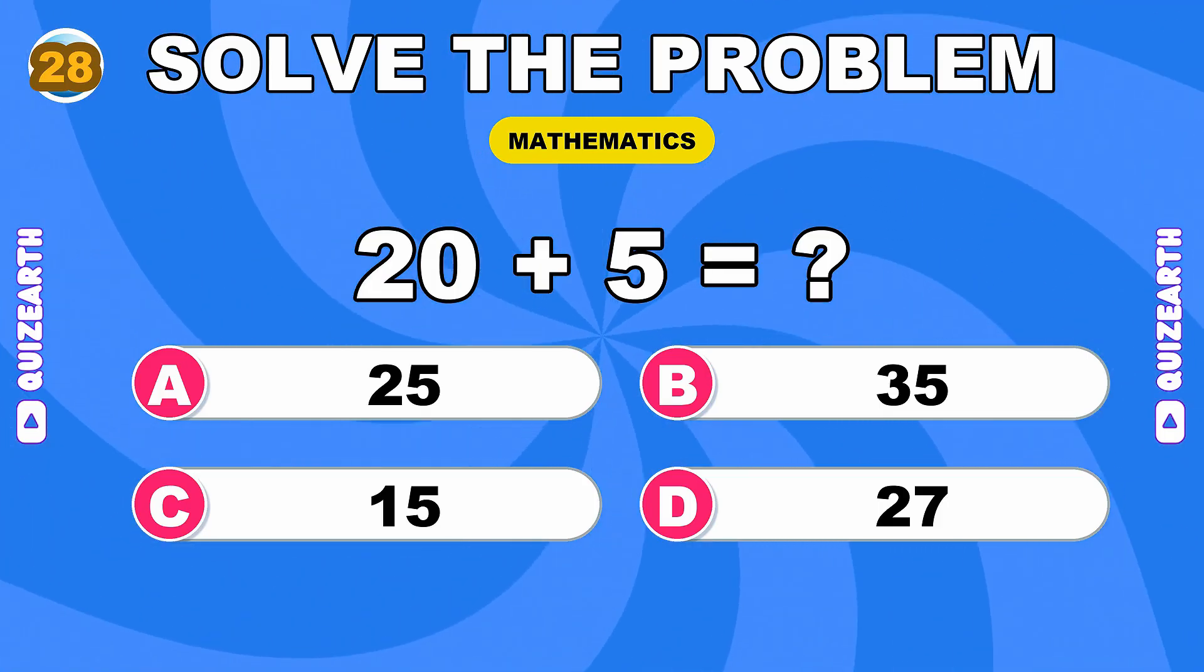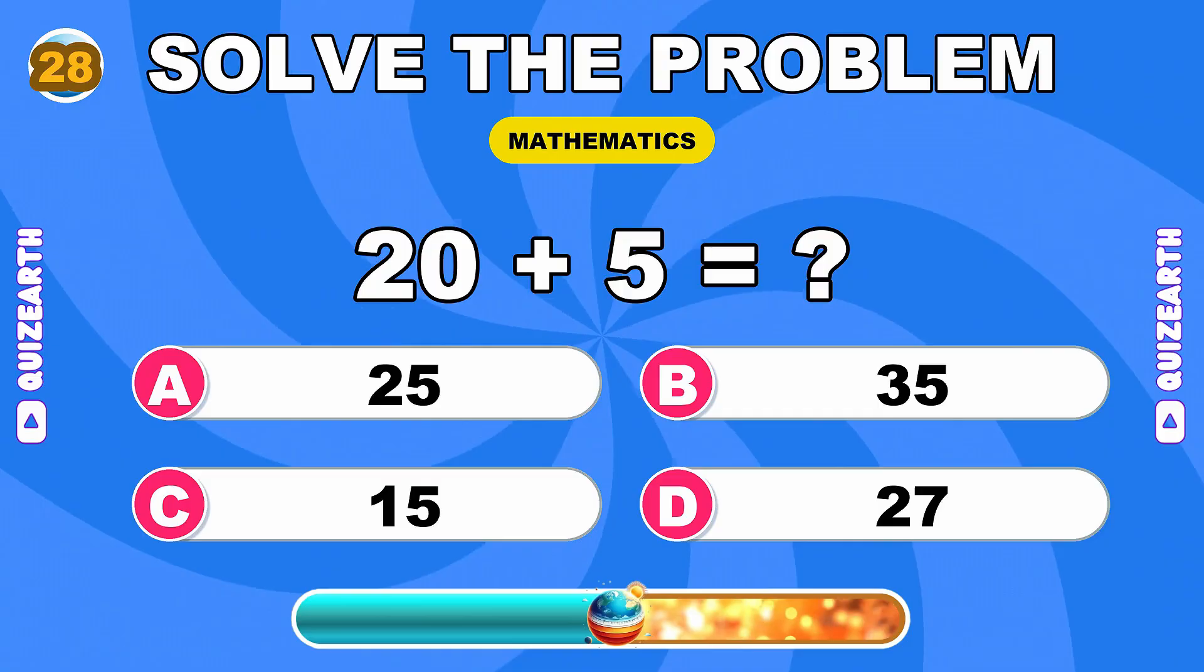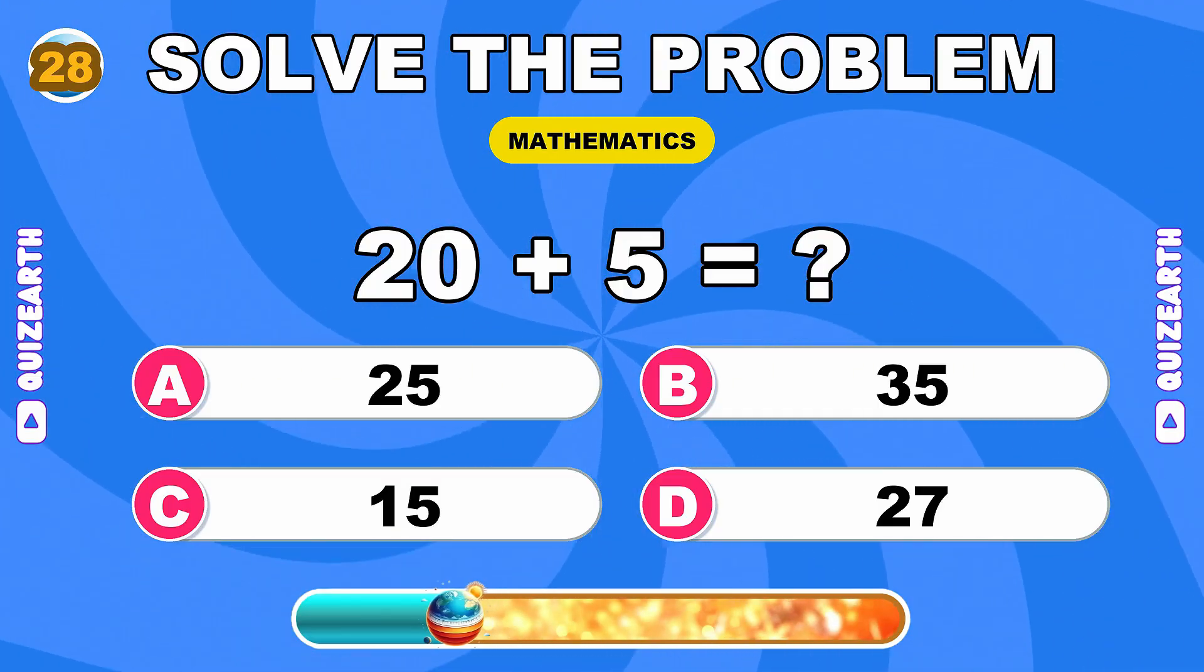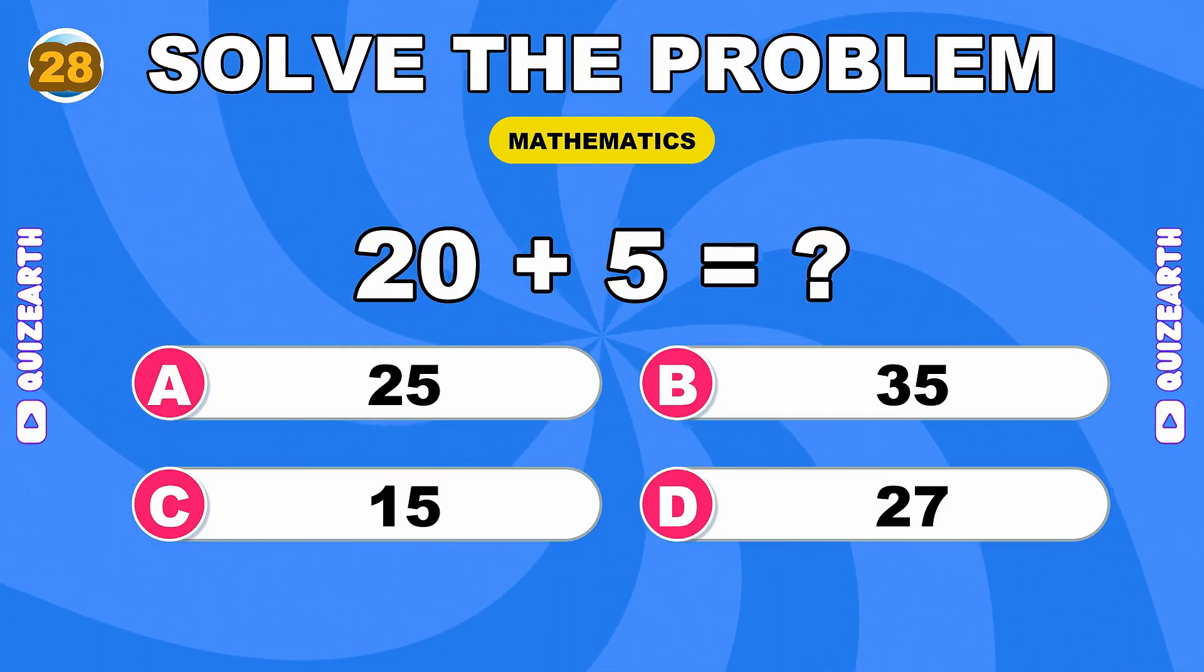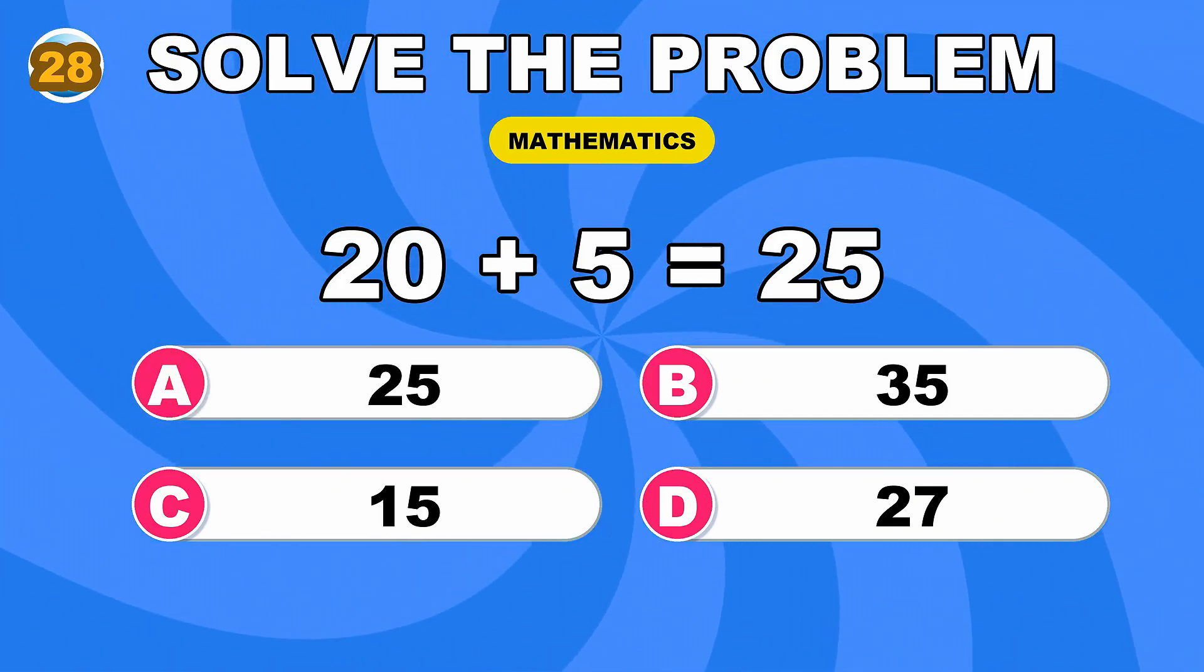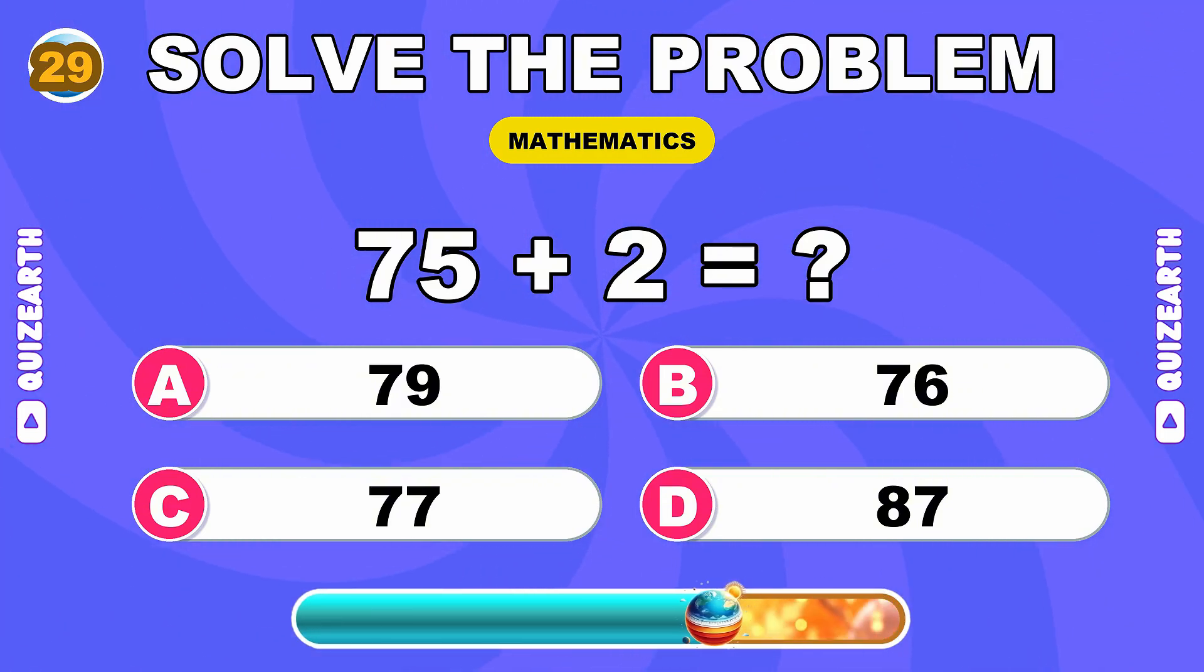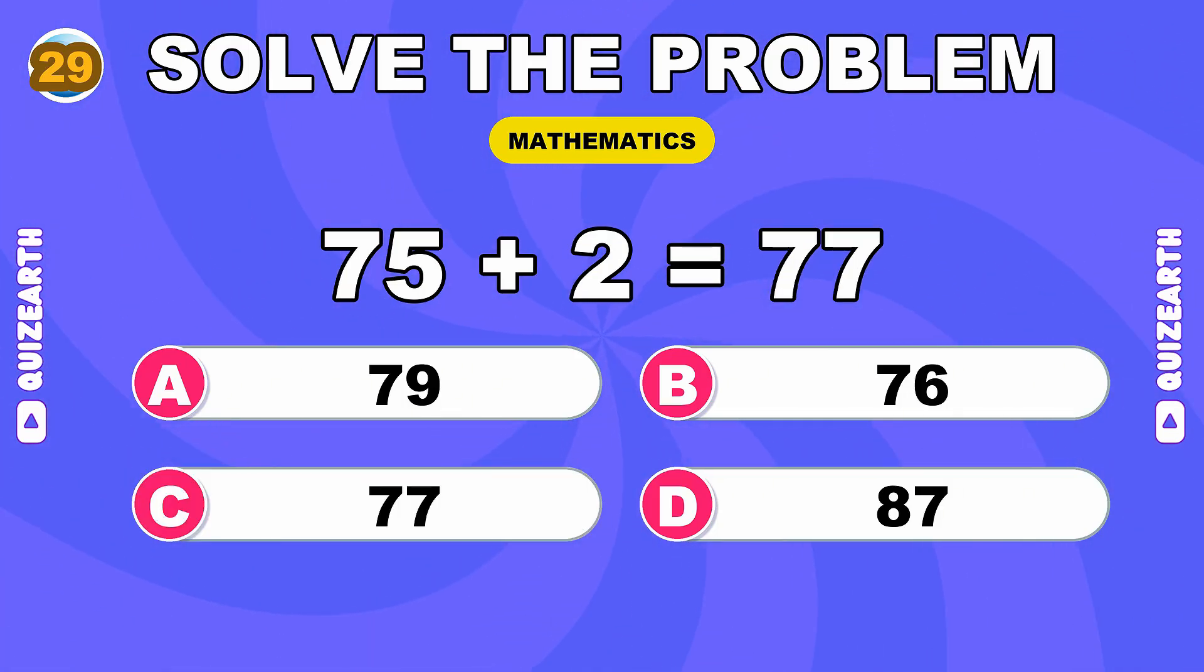What is 20 plus 5? Outstanding work, 25. How much is 75 plus 2? Mind-blowing, 77.